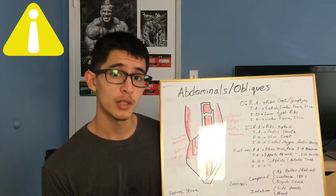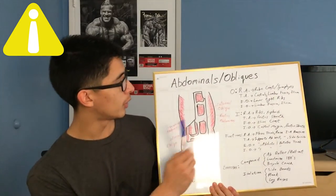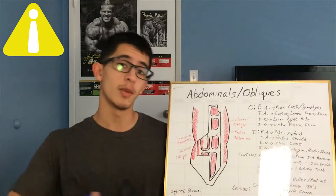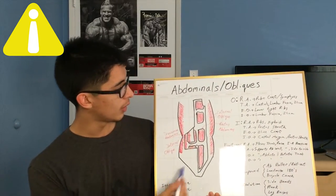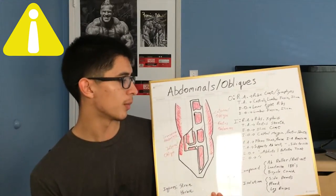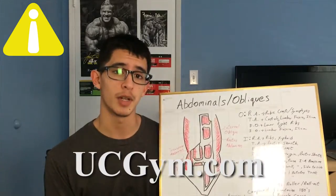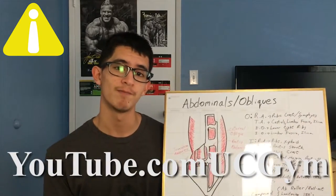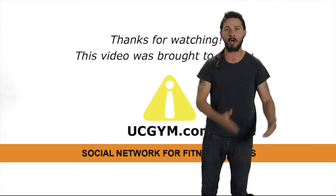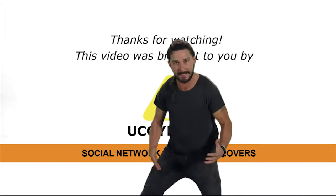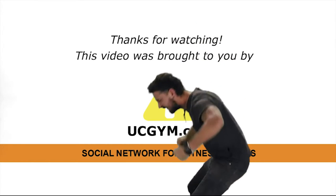That's pretty much it for the abdominal video. Remember, there are four abdominal muscles including the obliques: external oblique, internal oblique, rectus abdominis, and transverse abdominis. If you want to see more things like this, head over to UCGym.com and subscribe to our YouTube channel. Yesterday you said tomorrow, so just do it — make your dreams come true.